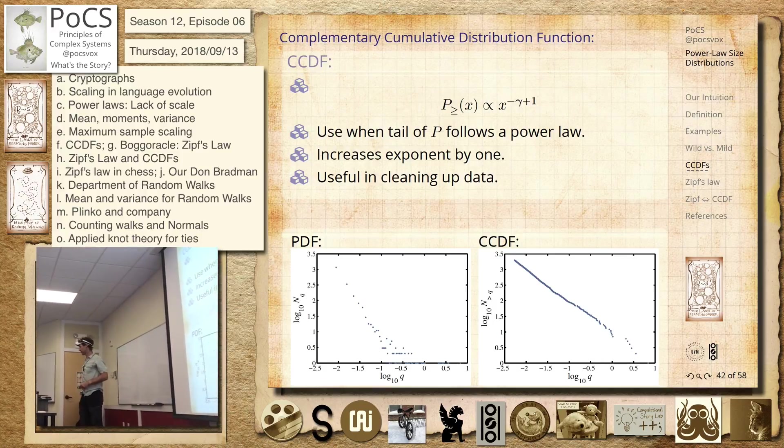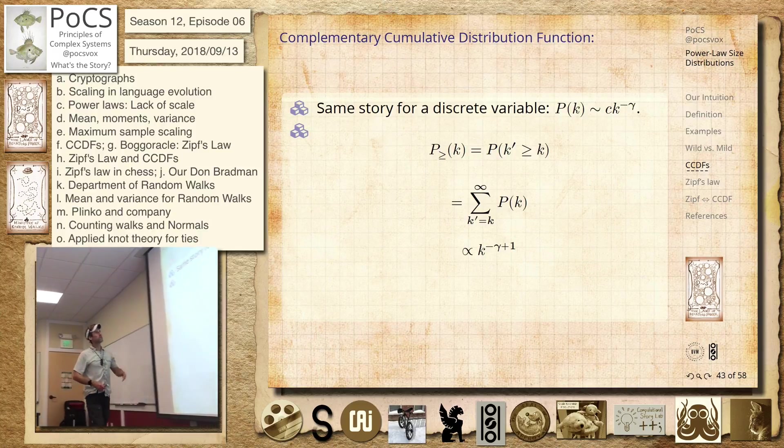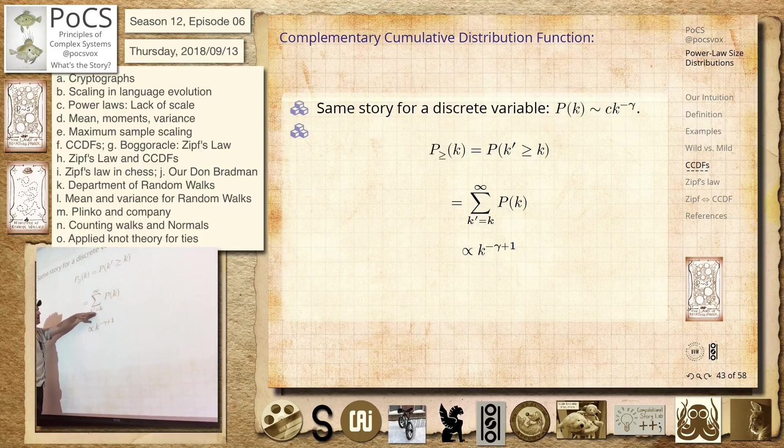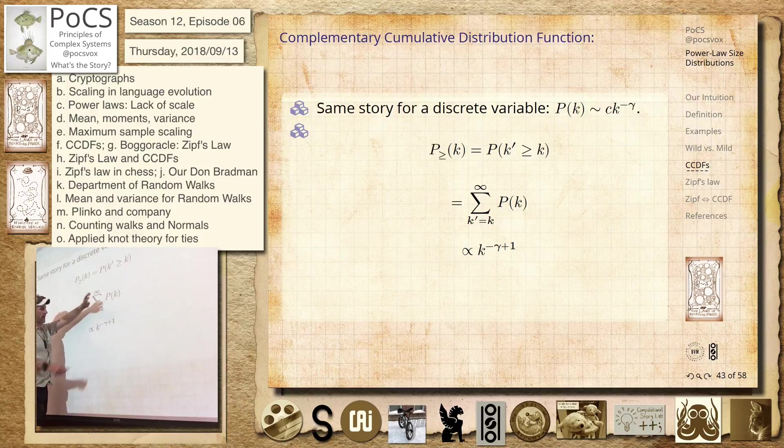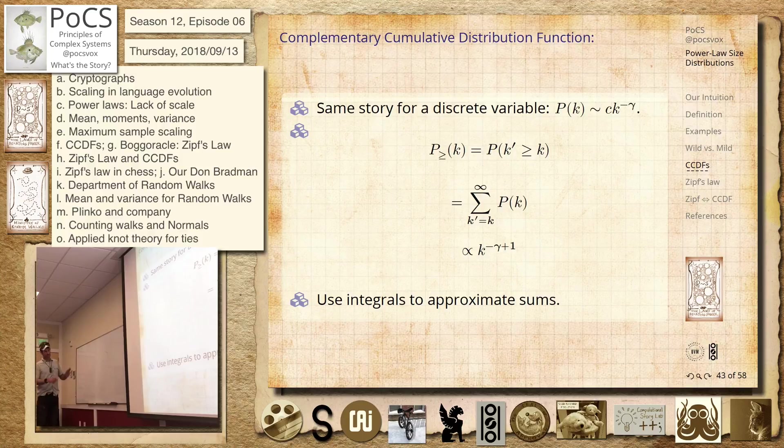So you always expect to see this. OK. Same story for a discrete variable. We've just got probability of k. k equals 1, 2, 3. Then usually the game here is we write, we put our, I haven't shown it here, but we always turn sums into integrals. Rough approximation. So that's OK. It's the story here. And we get the same thing. It's rough, but it's the same idea. Same thing holds.